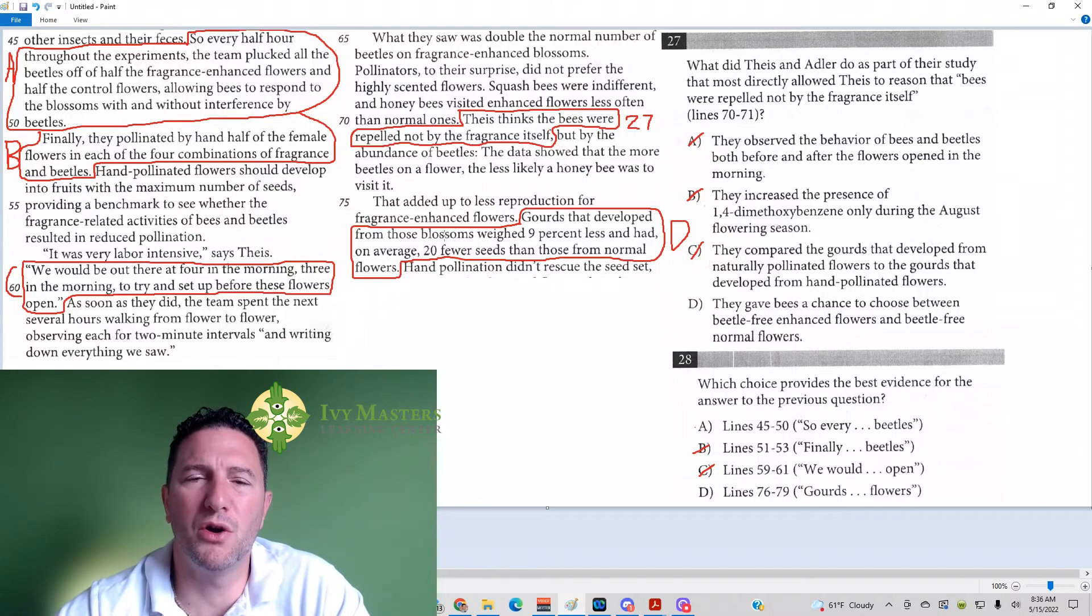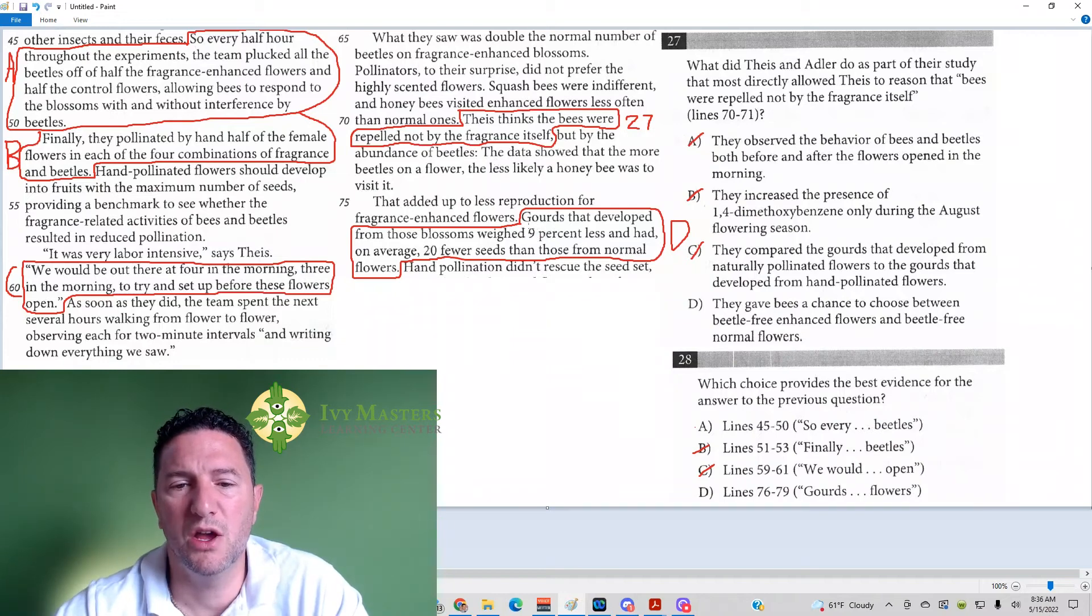As it turns out, the bees are repelled by the beetles and not by the enhanced aroma. And, of course, 27 saying, the bees were repelled not by the fragrance itself. Answer choice D: Gourds that developed from those blossoms weighed 9% less and had, on average, 20 fewer seeds than those from normal flowers.